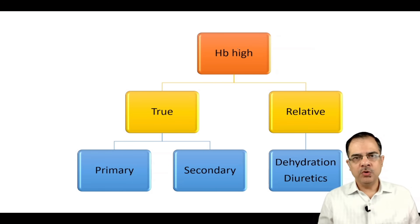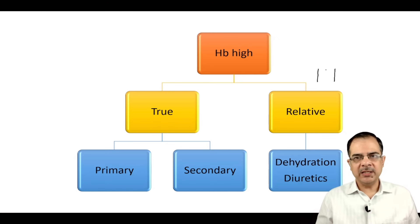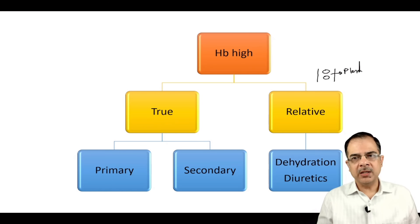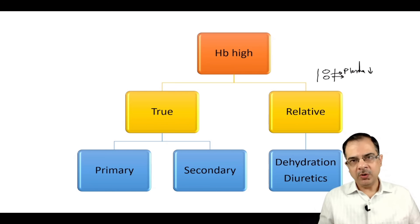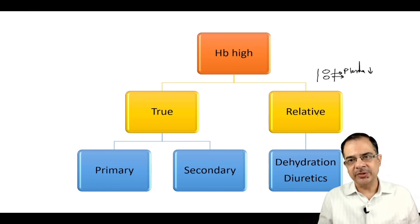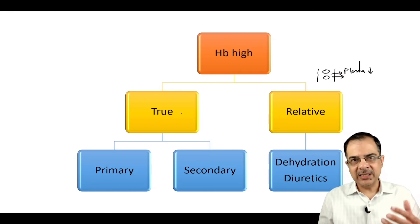Now moving to high hemoglobin. Always determine whether it is relative or true erythrocytosis. Relative means RBC concentration appears high due to plasma or water loss — dehydration or diuretics — so the RBCs themselves haven't increased. Always rule out dehydration and diuretic use first. Ask the patient to increase water intake, repeat CBC in two weeks — often hemoglobin normalizes.